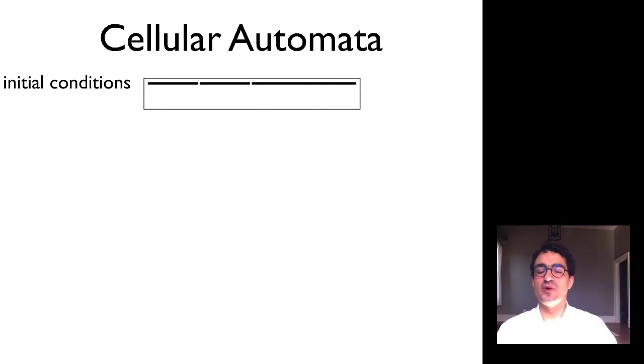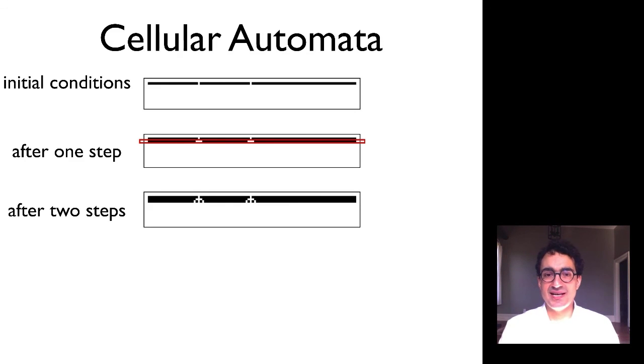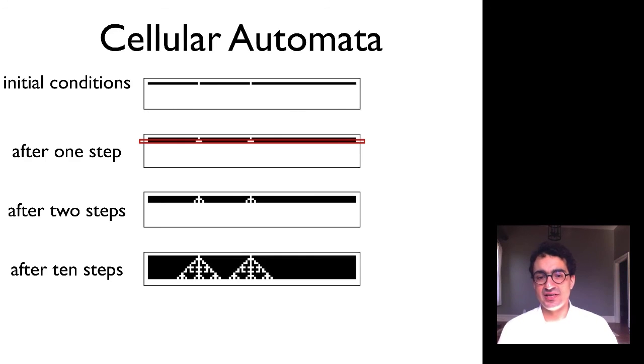So now we can watch rule 150 evolve over time. We begin with these initial conditions, and after one step what you can see is that the pixel just directly below that white pixel stays white because the value just above it is white, the value above it to the left is black, the value above it and to the right is black. That's an even number of black pixels and so that pixel there stays white. And now you can begin to see how that starts to spread out over time and the different ways in which these triangular patterns emerge.